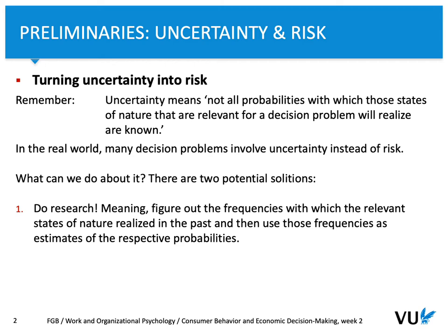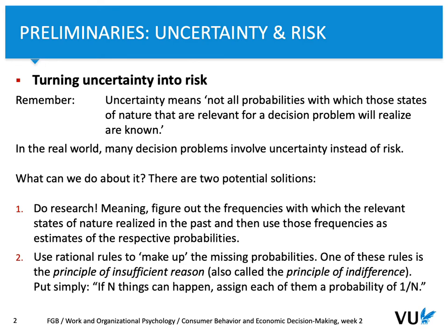Of course, it's not always one-to-one, but at least something. The second option to turn uncertainty into risk is to create some probabilities based on make-up estimations. You can use rational thinking in order to define those missing probabilities.